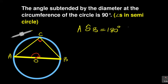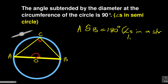180 degrees. Remember, we call this the angle in a straight line. It's 180 degrees. So we are going to say angle in a straight line. Since the angle in a straight line is equal to 180 degrees.